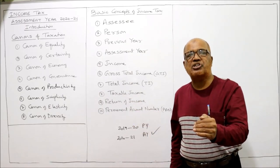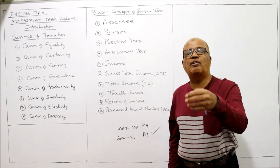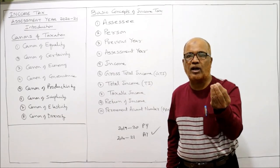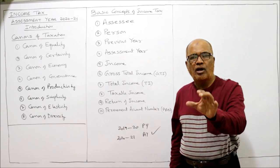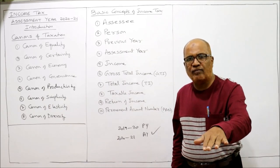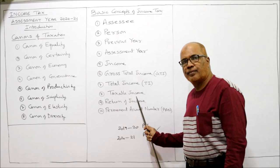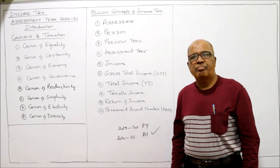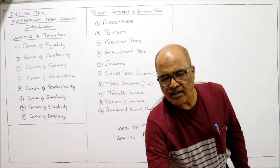After deducting all deductions from 80C to 80U, the resulting figure is called total income. From total income, the basic exemption limit is deducted — for example, 2,50,000 rupees for a non-senior person — and the resulting amount is called taxable income.